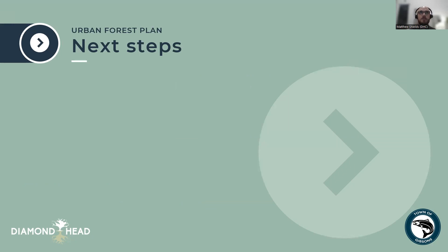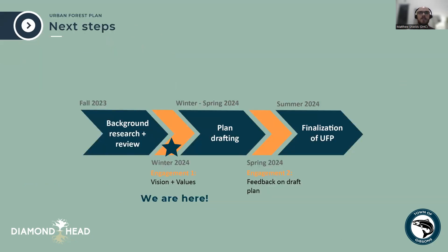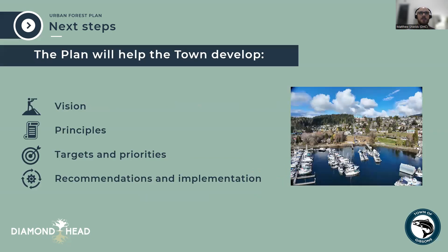With that said about challenges and opportunities, let me briefly touch on next steps. We're currently engaging with the public as a prelude to beginning plan drafting in earnest. Once the plan is drafted towards the end of spring, there will be another opportunity for the public to review the draft before it becomes finalized and presented to town council. You can stay tuned to the urban forest plan website for more information. The plan will help develop a vision, principles for management, targets and priorities, as well as recommendations to implement urban forest management in the community.